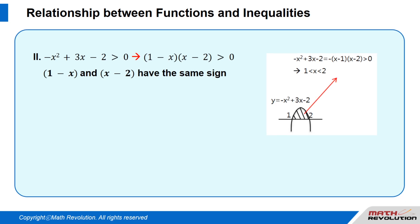Case 2: Negative x squared plus 3x minus 2 is greater than 0. We are looking for negative x squared plus 3x minus 2 is greater than 0, which can be factorized as (1 minus x)(x minus 2) is greater than 0.